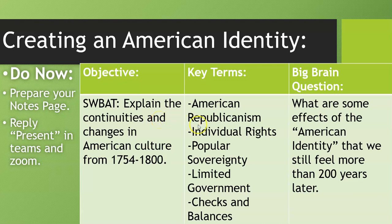All right everybody, here we go. Got another video lesson for you and there is no do-now or anything — it is just a quick lesson, probably going to be one of the shorter videos we've done. We are talking about the American identity and what American society is and looks like. We're going to talk about continuities and changes in American culture from 1754 through 1800. The buck stops at 1800 because once we hit Jefferson it's a whole different ballgame.